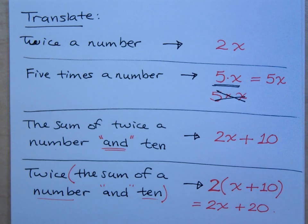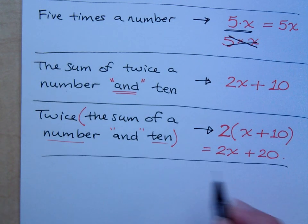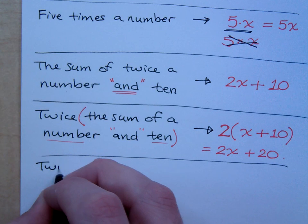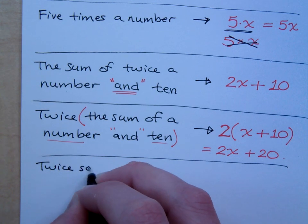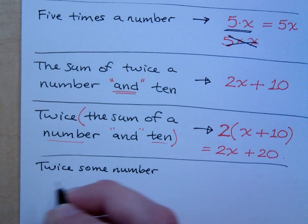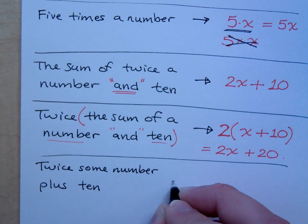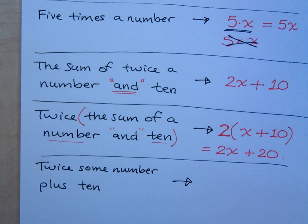Now, just so I can confuse you guys just a little bit more, if I were to say this, twice some number plus ten. How would you write twice some number plus ten?